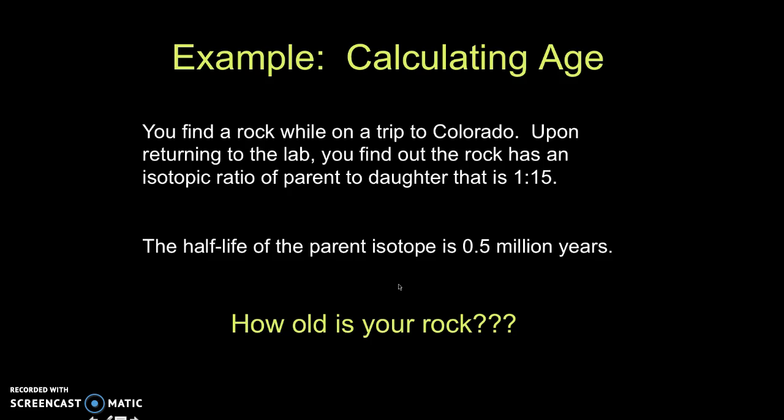So the question is how can we calculate the age date of a rock? I have an example here that you go on a trip out to Colorado, you find a sample, you bring it back to the lab and you find out that it has an isotopic ratio of parent to daughter that is 1 to 15, so one atom of the parent to 15 of the daughter. You know that the half-life of the isotope that you're using is 0.5 million years. So the question is how old is your rock?